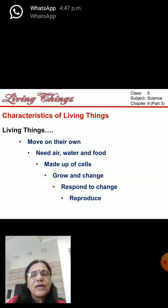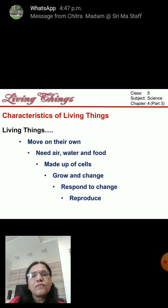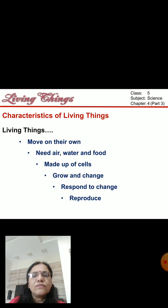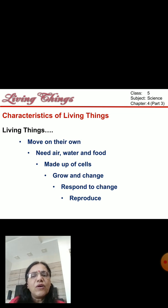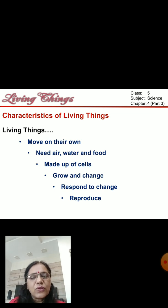Now there are certain characteristics which are seen only in living things. They move on their own. Living things need air, water and food to live. Living things are made up of cells. Living things can grow and change in their appearance. Living things respond to changes in their environment, and living things reproduce.